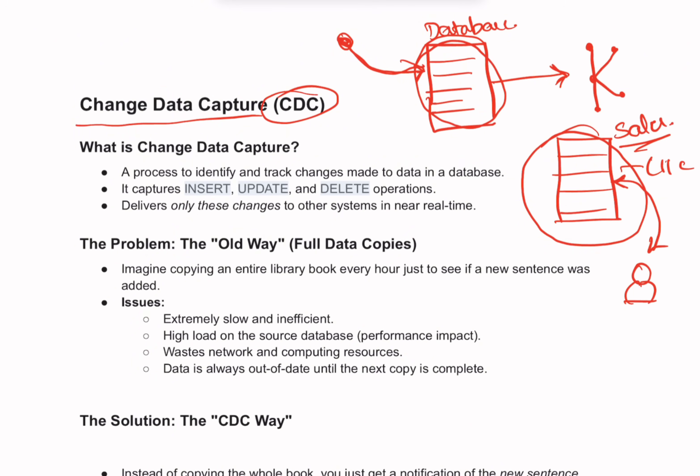The old way of doing this would be to copy the entire book every hour — just Control C and Control V every hour. This is slow, uses a lot of resources, and puts a heavy load on your main system. You'd be copying millions of old records just to get a few new ones. Instead, imagine an automated system that only notes the new or updated sales entries and sends those to users. That's what CDC does.